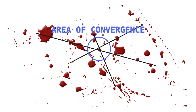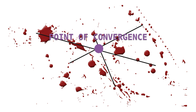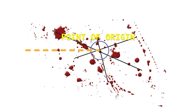Similarly, the point where multiple blood stains seem to intersect is called the point of convergence. Compared to the two-dimensional area of convergence, the point of origin is a three-dimensional space from which the blood came.